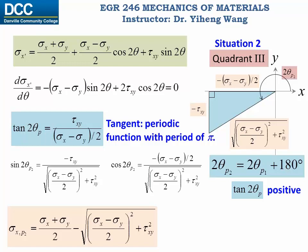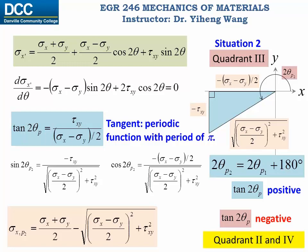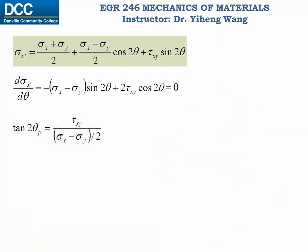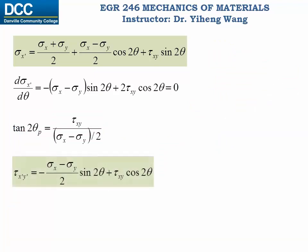Don't forget, this analysis applies when tangent(2*theta_p) is negative as well. In that case we look at two angles belonging to quadrants 2 and 4 respectively, but the expressions derived are exactly the same. On the other hand, at these two critical points you can evaluate the associated in-plane shear stress, and in either case that shear stress will be zero.